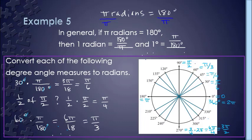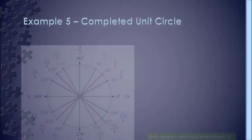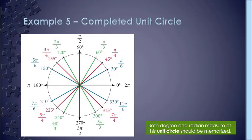I'll let you try the rest of these on your own, but because of the symmetry involved with each quadrant, consider that as you move along, and also practice doing the arithmetic. Go ahead and pause the video and try this on your own. Then on the next slide you should see the answers. Let's take a look at the completed unit circle and see if you came up with what I came up with.